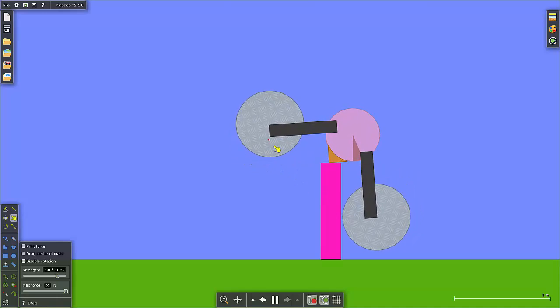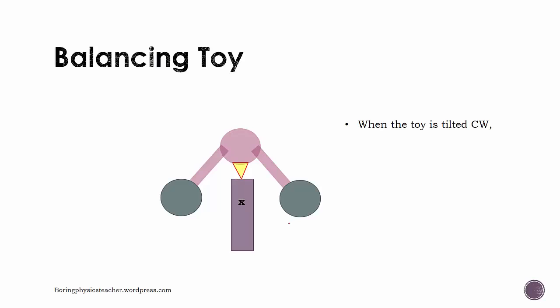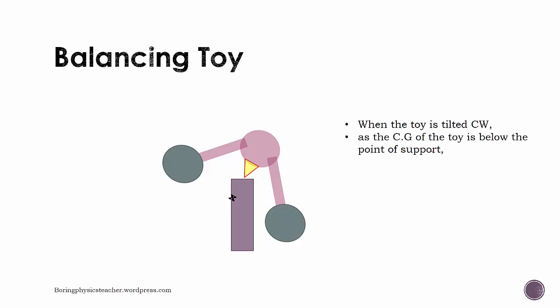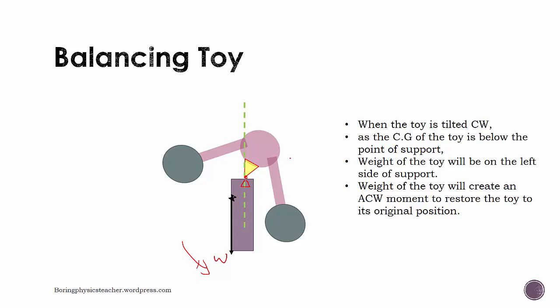So how does it work when the toy is tilted in a clockwise manner? Again, the center of gravity will follow in this manner. But in this case, the center of gravity of the toy is still below the point of support. This is the point of support and the weight will be on the left side of the support. You find that this is the support and this is the weight, so you will actually create an anti-clockwise moment to restore the toy to its original position. Likewise, if you try to tilt it anti-clockwise, you will do the opposite.